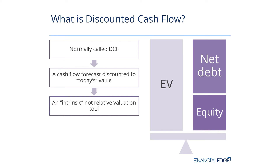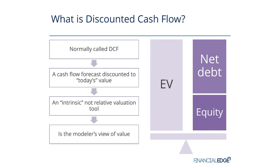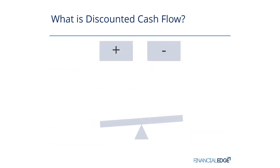It is an intrinsic, not a relative, valuation tool. A relative valuation tool looks at similar companies, sees what they're worth, finds some ratios, and applies them to our company. Not so with a DCF — a discounted cash flow looks at the revenues, costs, and all of the cash flows of the company, finds the cost of that company's finance, and finds its value — very much looking internally. And lastly, it's the modeler's view of value, not looking externally towards other companies.